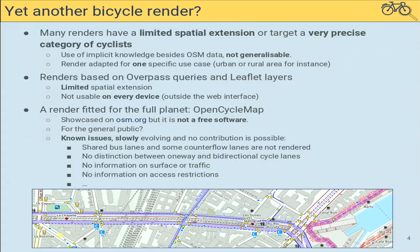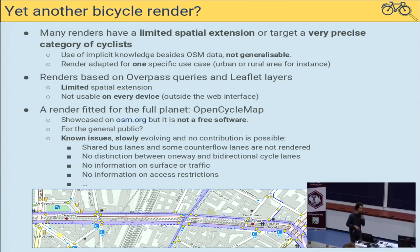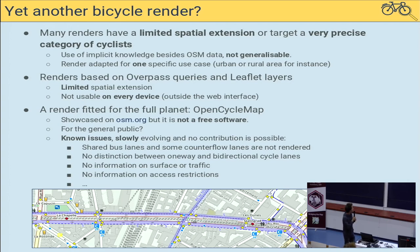So why would we need another one? Some previous approaches have a local scale — they are built with implicit knowledge of a specific city and for a specific kind of cyclist, like urban commuters. They also rely on technologies like Overpass queries and flat layers, so they are not widely usable on any device. The only one fitted for the full planet with tiles and reusability is OpenCycleMap, but sadly it's not free software, so contribution is difficult.